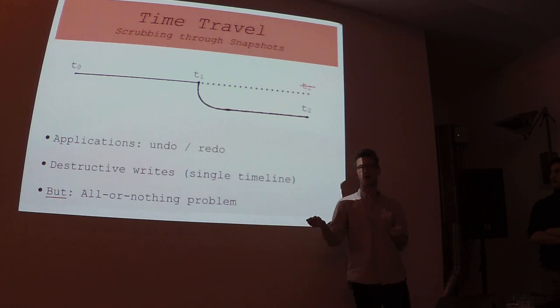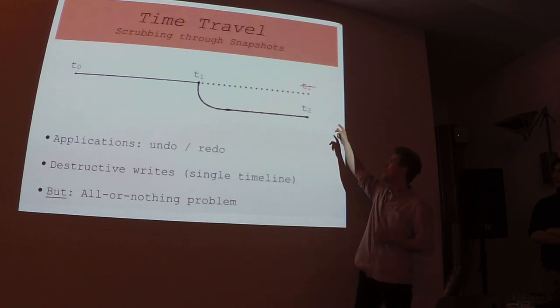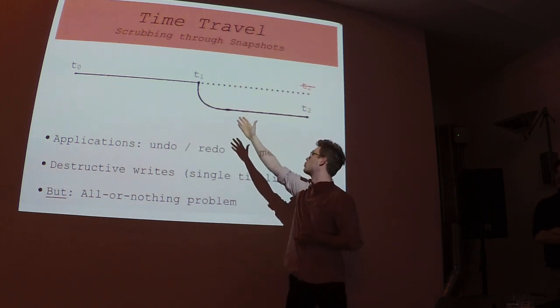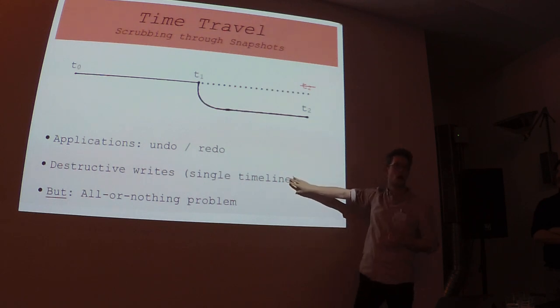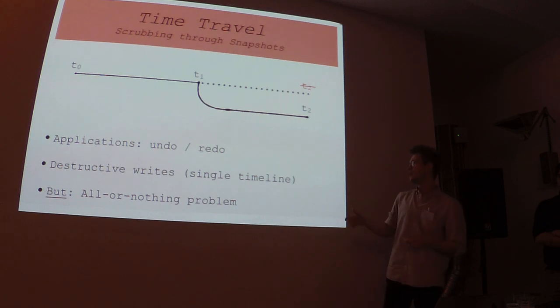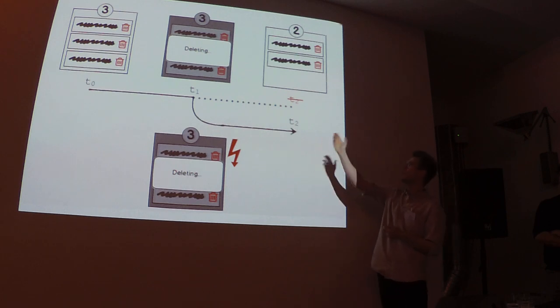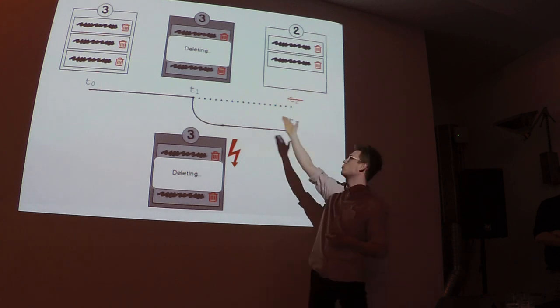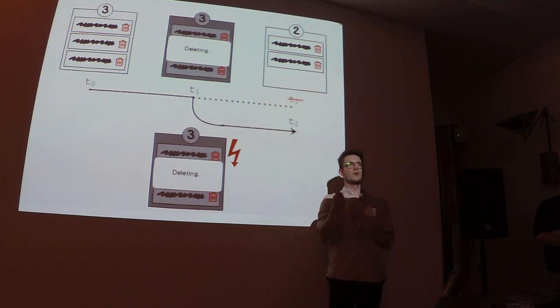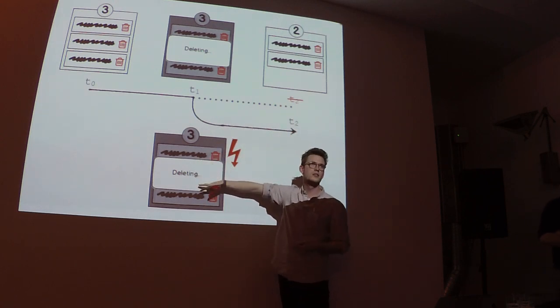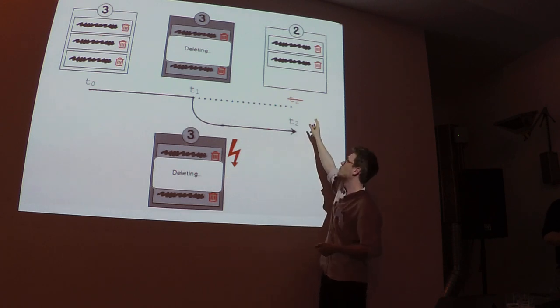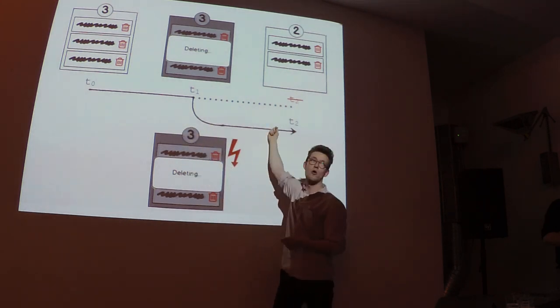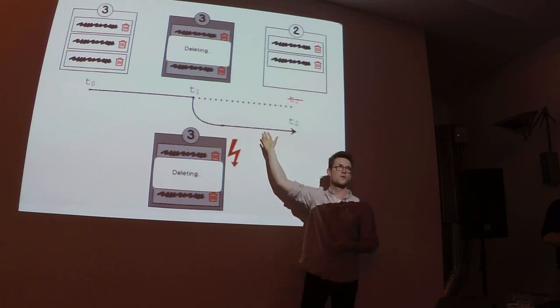We can now define what we think is a snapshot, which is basically a database at some time T star. We consider the sum of all facts that happened before this T star, denoted by this less equals relation. That allows us to do quite cool things - we can now time travel, at least along one dimension. That's mostly undo and redo. We can move from T0 to T1 to T2, and if we decide we want to go back, we can. But when we do something else, we still are in the same timeline - our writes are destructive. We destroy the old timeline and fork off it. Another more pressing matter is that we have this all or nothing problem.